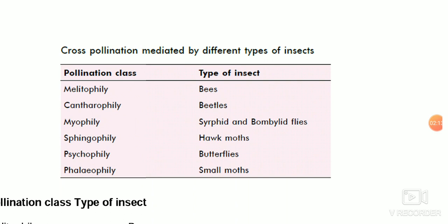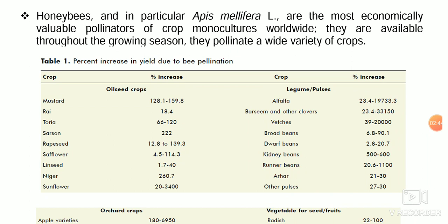See this list of cross-pollination mediated by different types of insects. If pollination occurs by bees, the class name is Melitophilae. If through beetles, it is Cantharophilae. Similarly, in the case of syrphid fly and blowfly, it is Myophilae, and in the case of butterflies, it is Psychophilae. Remember these for exams.